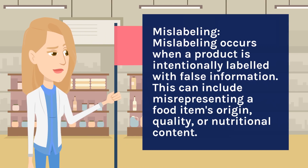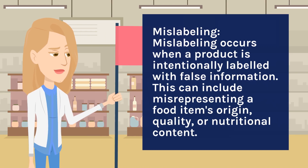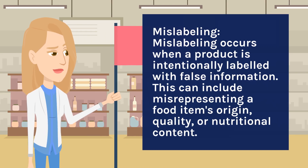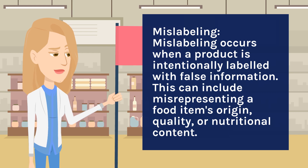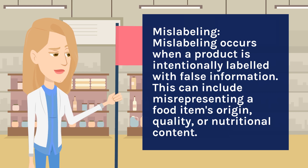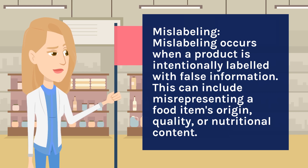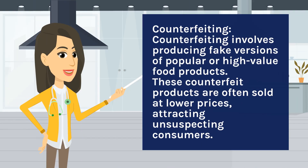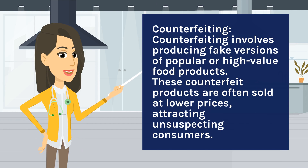Mislabeling occurs when a product is intentionally labeled with false information. This can include misrepresenting a food item's origin, quality, or nutritional content. Counterfeiting involves producing fake versions of popular or high-value food products. These counterfeit products are often sold at lower prices, attracting unsuspecting consumers.